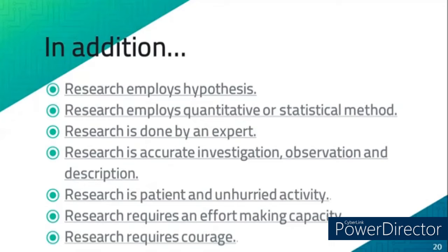Research employs quantitative or statistical methods — to test the hypothesis, a researcher must transform the results of experimentation into data to be used for a statistical test. Research is done by an expert — the researcher uses a valid experimentation procedure and is guided by an expert in the field to ensure the reliability of the methodology. Research is accurate investigation, observation, and description — every research activity must be done accurately so that the findings lead to the formulation of scientific generalizations. Research is a patient and unhurried activity — a researcher must not hurry; there are studies that need an amount of time to test the research results.